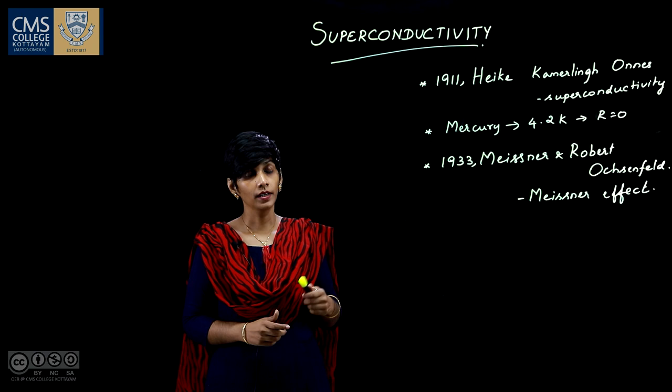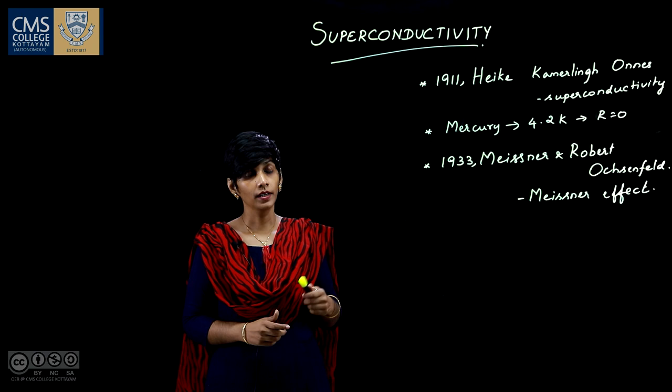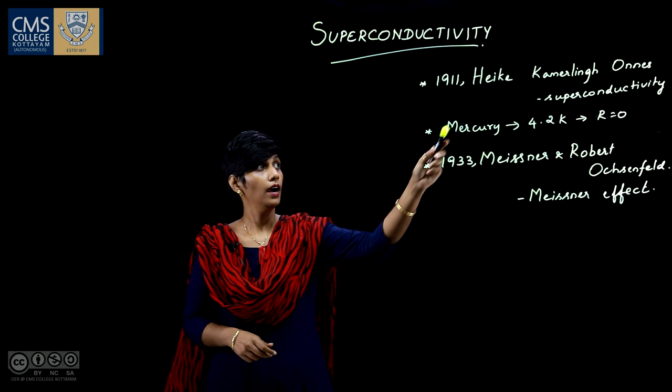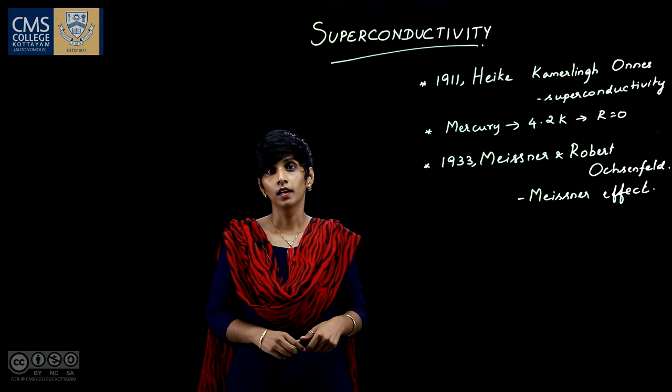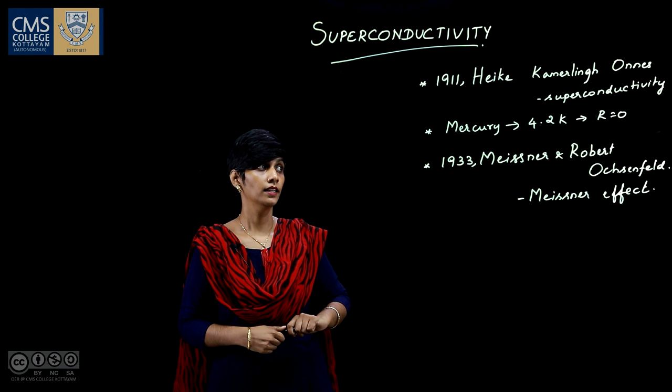In 1911, superconductivity was first observed by Dutch physicist Heike Kamerlingh Onnes. When he cooled down mercury to the temperature of liquid helium, that is 4.2 Kelvin, he observed that the resistivity becomes zero.